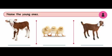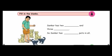Assignment. First one — Name the young ones. Look at this picture and name the young ones. Cow's young one is a calf. Hen's young one is a chick. Goat's young one is a kid. Second one — Fill in the blanks. Sankar has two kittens and three puppies. So, Sankar has five pets in all.